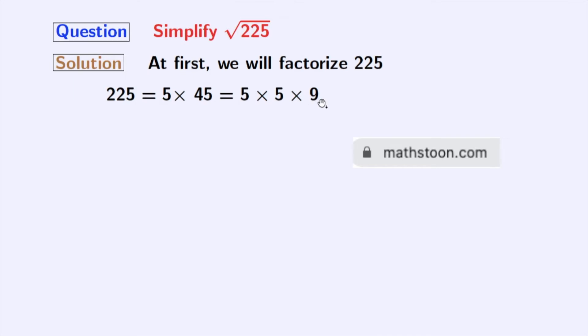Now we all know that 9 equals 3 times 3. All these numbers here are prime numbers, so we will stop factorizing further. So finally we have 225 equals 5 times 5 times 3 times 3.